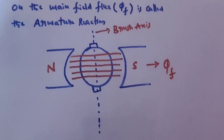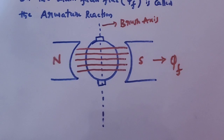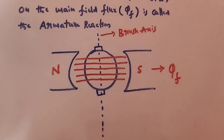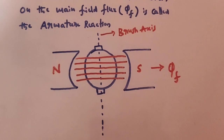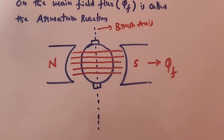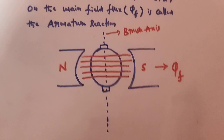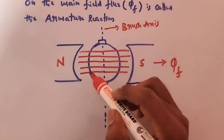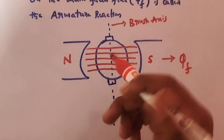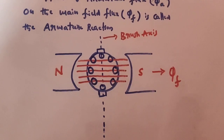Now we'll discuss armature flux, but before that let us focus on how we generate an EMF using Faraday's law of electromagnetic induction. Faraday's law states that whenever a conductor is placed in a magnetic field, an EMF is going to be induced. In other words, whenever a conductor has a flux cutting action, an EMF is induced. I'll explain how it is induced using Fleming's Right Hand Rule.